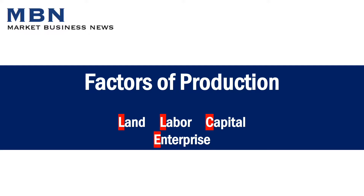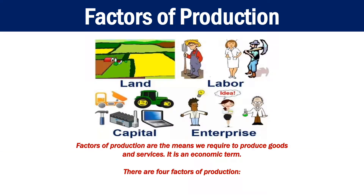What are the factors of production? The factors of production are the means we require to produce goods and services. It is an economic term. There are in total four factors of production. They are land, labour, capital and enterprise.